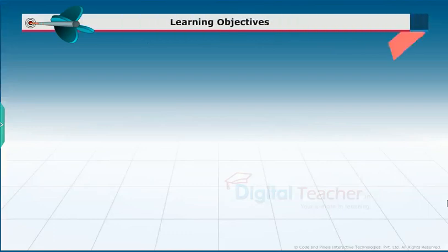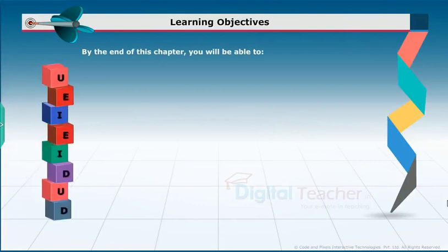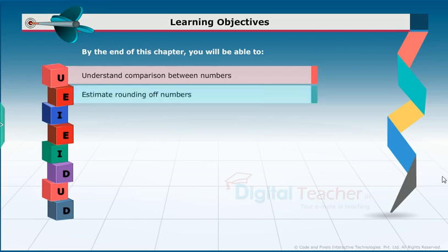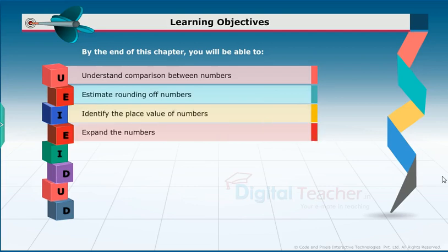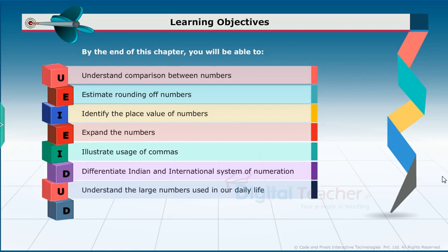Learning Objectives: By the end of this chapter, you will be able to understand comparison between numbers, estimate rounding of numbers, identify the place value of numbers, expand the numbers, illustrate usage of commas, differentiate Indian and international system of numeration, understand the large numbers used in our daily life, and describe the units of lengths, weights and liquids.